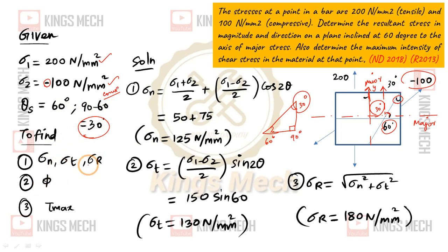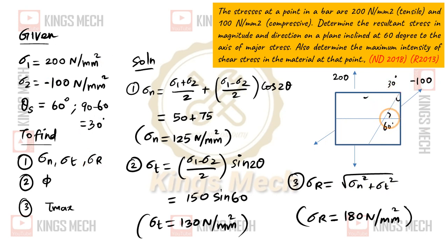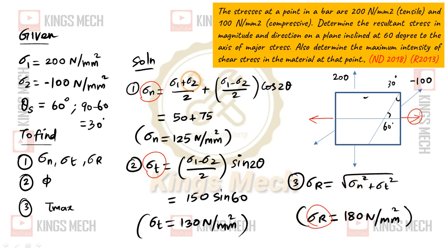So what we need to find is the resultant stress. It comes under the oblique stress problem. Resultant stress is nothing but the square root of (normal stress squared plus tangential stress squared). The normal stress formula is: sigma_n = (sigma1 + sigma2)/2 + (sigma1 - sigma2)/2 × cos 2θ.